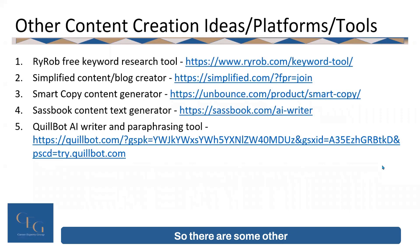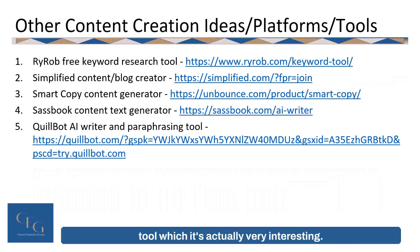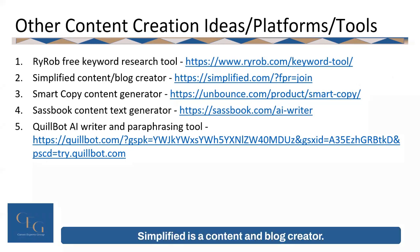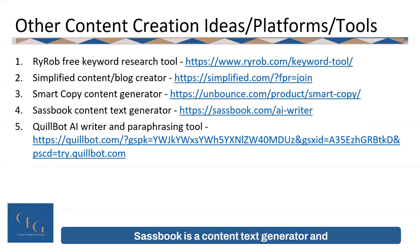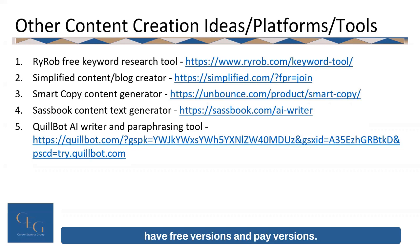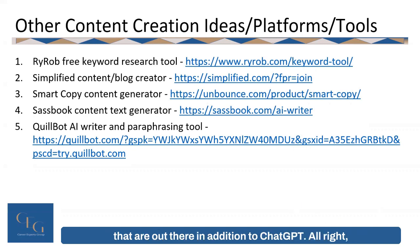There are some other content creation platforms out there. Ryrob is a free keyword search tool that lets you know what the top keywords being searched are. Simplified is a content and blog creator. Smart Copy is a content generator. SAS Book is a content text generator. And Quillbot is an AI writer and paraphrasing tool. Some of these are completely free; some have free and paid versions. This gives you some idea of other tools in addition to ChatGPT.